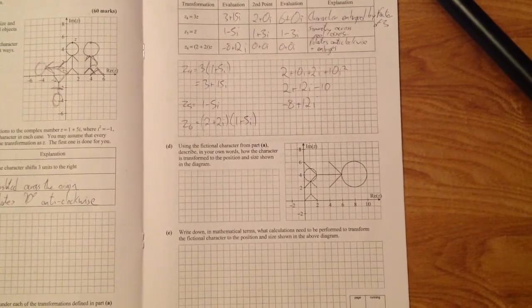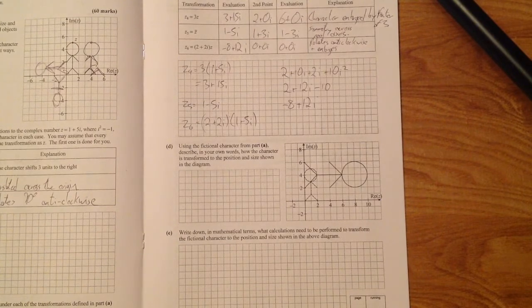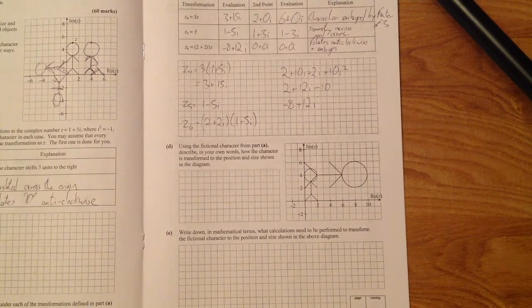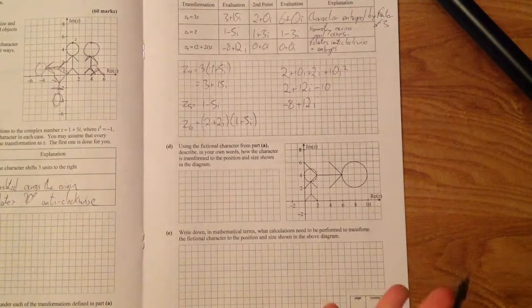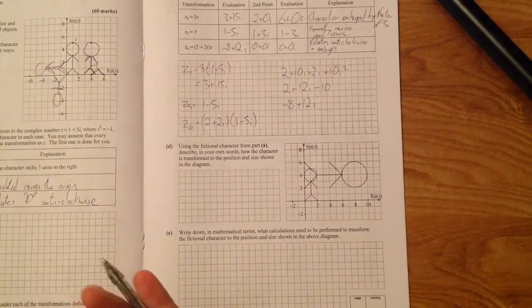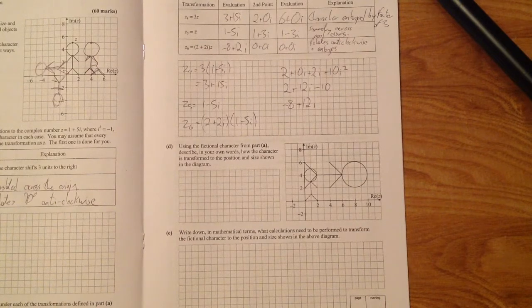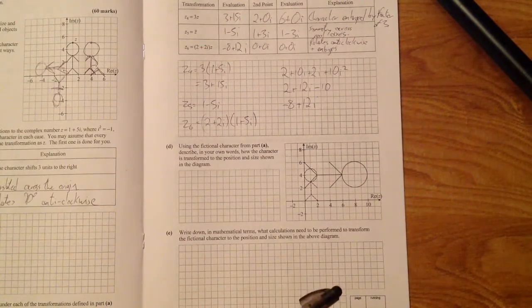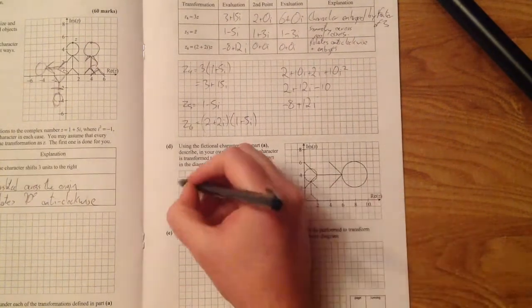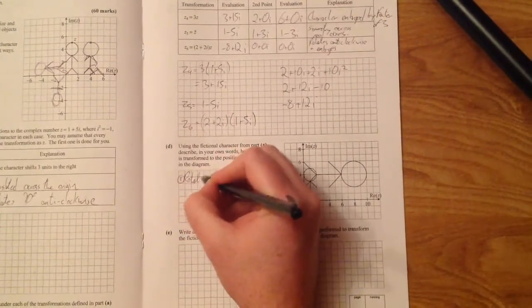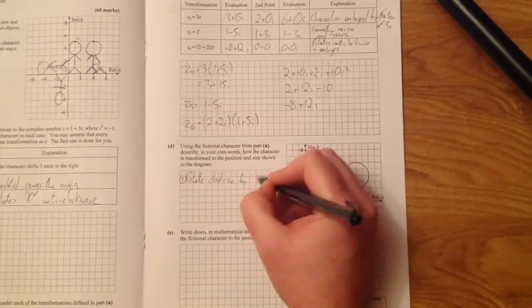Part D says, using the fictional character from part A, describe in your own words how the character is transformed to the position and size shown in the diagram. So knowing your transformation here is very important. So a few things happen to our character. He seems to rotate to the right or clockwise. He seems to be enlarged by a factor of 2 or 3. A factor of 2. And he also goes up 6 units. So what you need to do here is explain in your own words what has to happen. So he needs to rotate. So first, rotate clockwise by 90 degrees.